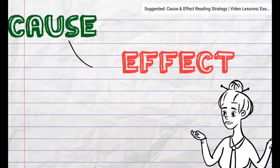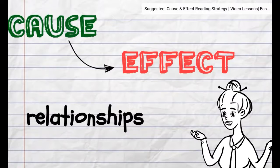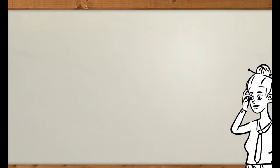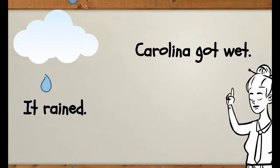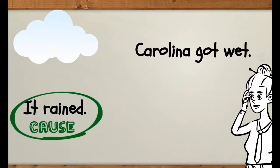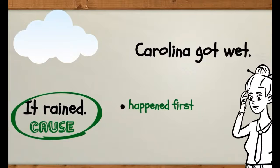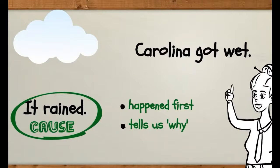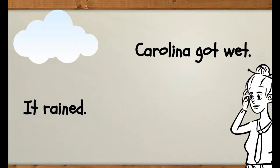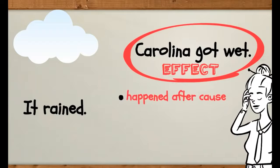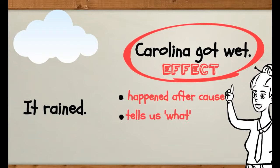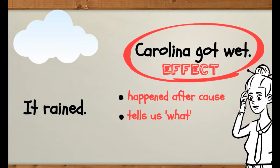Let's look at some cause and effect relationships. It rained. Carolina got wet. It raining is the cause because it must have occurred first, and because it tells us why Carolina got wet. Carolina getting wet is the effect because it had to have happened after the cause, and it tells us what happened.